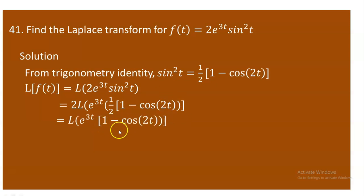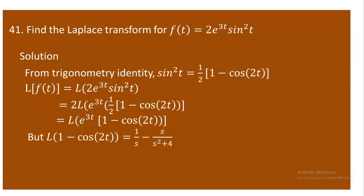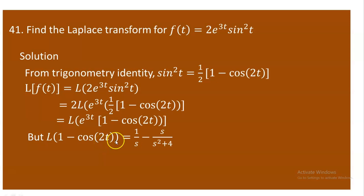Using the shifting property, we first find the Laplace of (1 − cos 2t) and then substitute s − 3 for s, since the coefficient of t in e^(3t) is 3. By linearity, the Laplace of 1 is 1/s, and the Laplace of cos(2t) is s/(s² + 4), so the Laplace of (1 − cos 2t) is 1/s − s/(s² + 4).